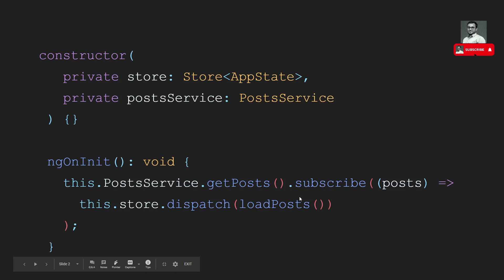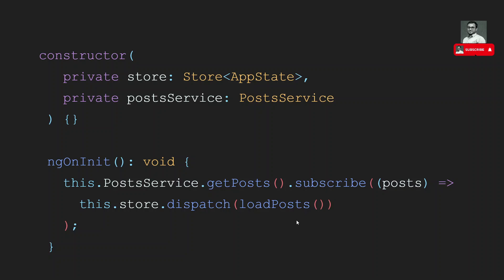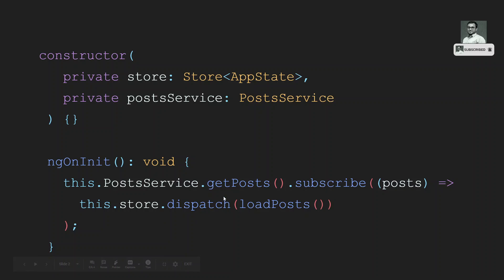Traditionally, what we would do is inject the store and inject the service into the component. In the component, we call something like `this.postService.getPost()`, which calls the external database to get all post data. Upon subscribing, we get the post data and dispatch an action using `this.store.dispatch()`. This is the wrong way — it is a bad practice to use this type of architecture.